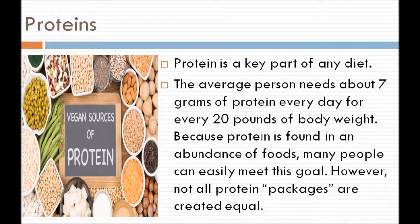Proteins. Protein is a key part of any diet and is very compulsory for our body. The average person needs about 7 grams of protein for every 20 pounds of body weight every day. Because protein is found in an abundance of foods, many people can easily meet this goal. However, not all protein packages are created equal. In children, the growth of cells is more compared to adults; therefore, growing children should consume more protein than adults.